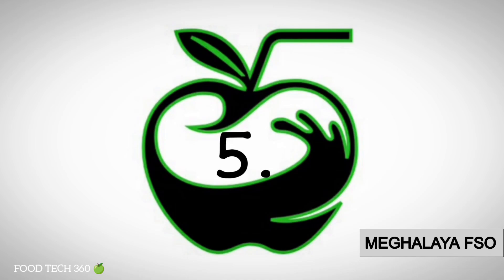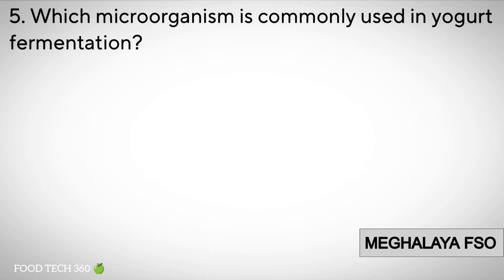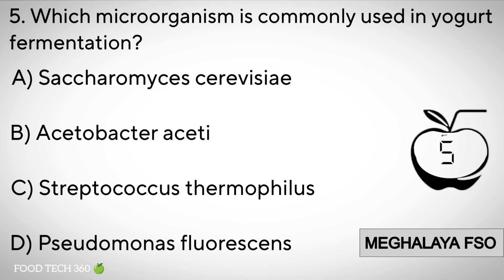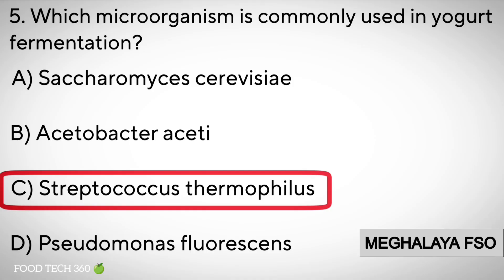Question number 5: Which microorganism is commonly used in yogurt fermentation? Options: A. Saccharomyces cerevisiae. B. Acetobacter aceti. C. Streptococcus thermophilus. D. Pseudomonas fluorescens. Correct answer: C. Streptococcus thermophilus.